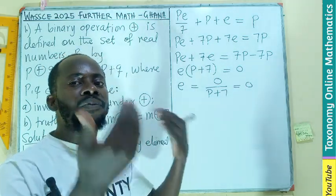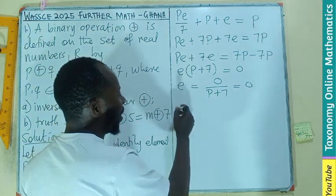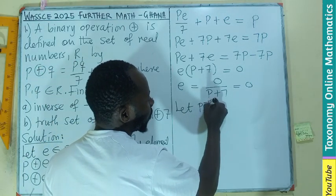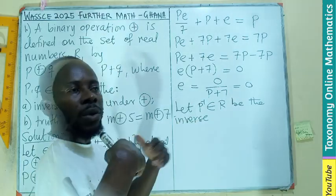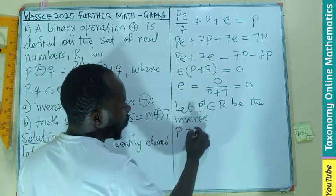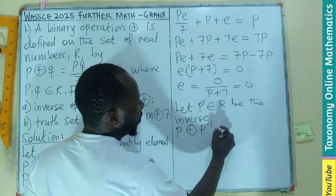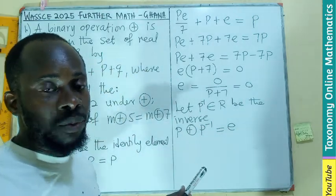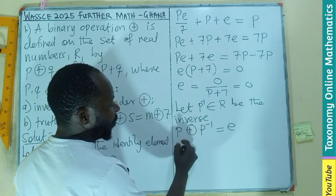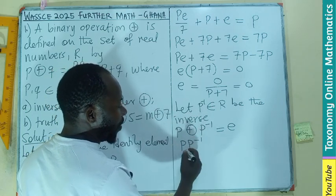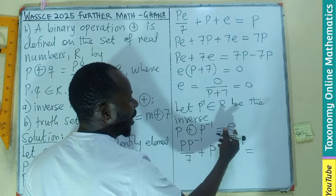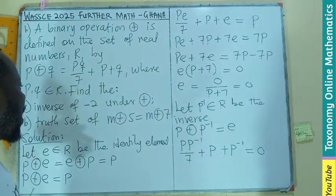Since we found the identity element is zero, we can now find the inverse. Let p' be the inverse of p. Then p ⊕ p' = e = 0. Applying the definition: pp'/7 + p + p' = 0. Remember the question asks for the inverse of negative 2.